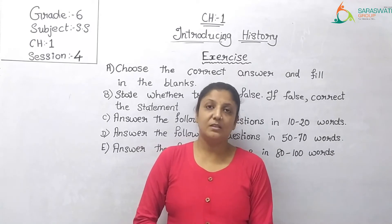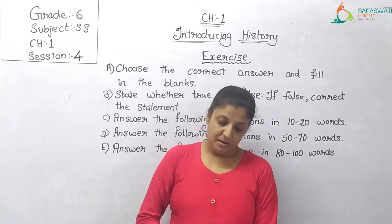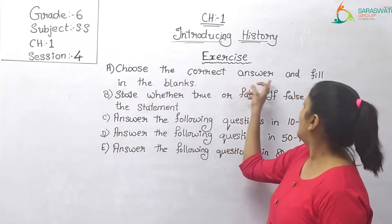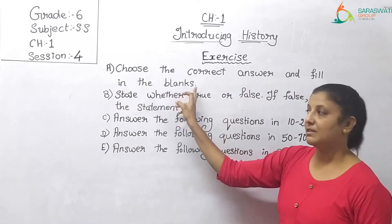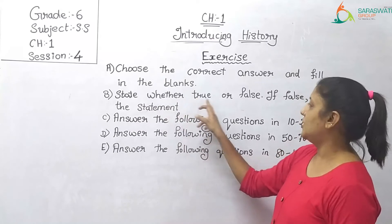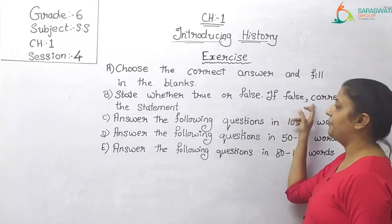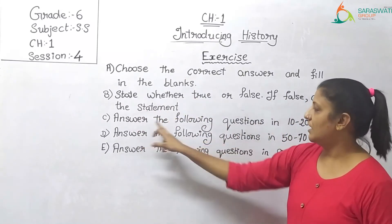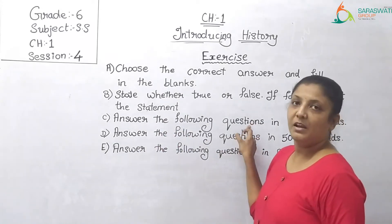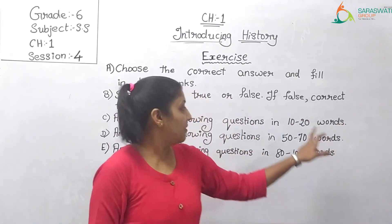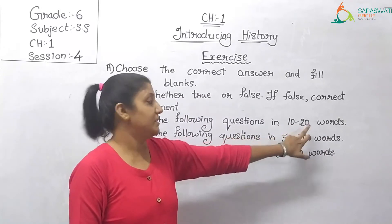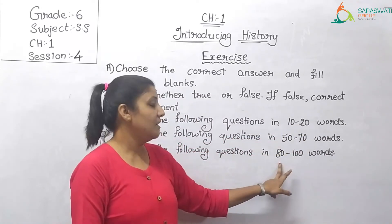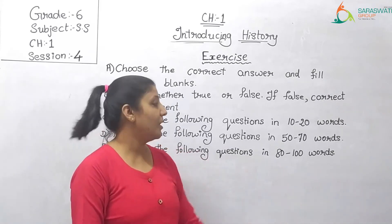Firstly, I will start with main question A: choose the correct answer and fill in the blanks. Then main question B: state whether true or false; if false, correct the statement. Then answer the following questions — first, 10 to 20 words; then 50 to 70 words; and then long answers for 80 to 100 words.